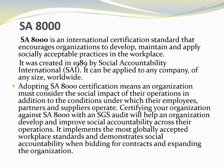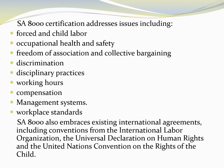SA-8000 is an international certification standard that encourages organizations to develop, maintain, and apply socially acceptable practices in the workplace. Created in 1989 by Social Accountability International (SAI), an affiliate of the Council of Economic Priorities, it can be applied to any company of any size, anywhere in the world. SA-8000 certification covers: forced and child labor, occupational health and safety, freedom of association and collective bargaining, discrimination, disciplinary practices, working hours, compensation, management systems, and workplace standards. It also embraces existing international agreements including conventions from the International Labour Organization, the Universal Declaration of Human Rights, and the UN Convention on the Rights of the Child.